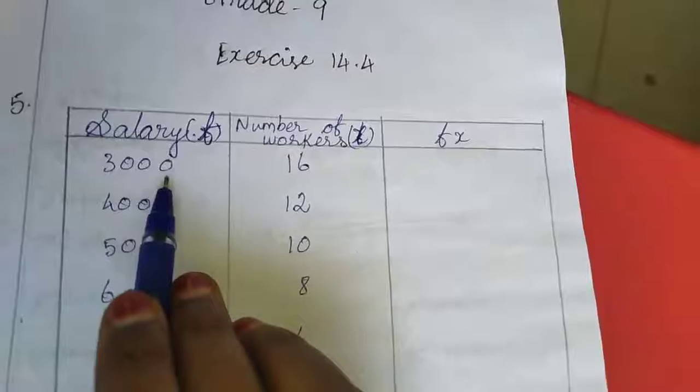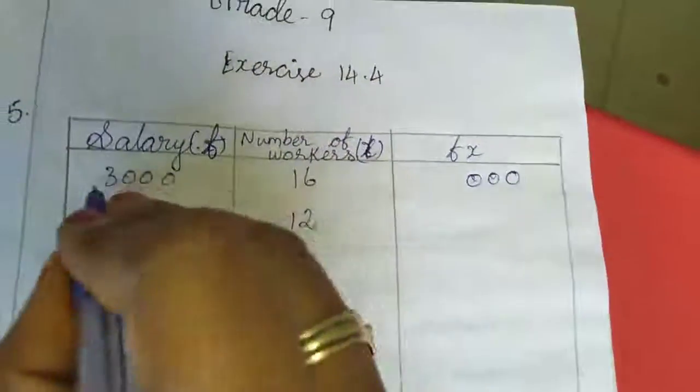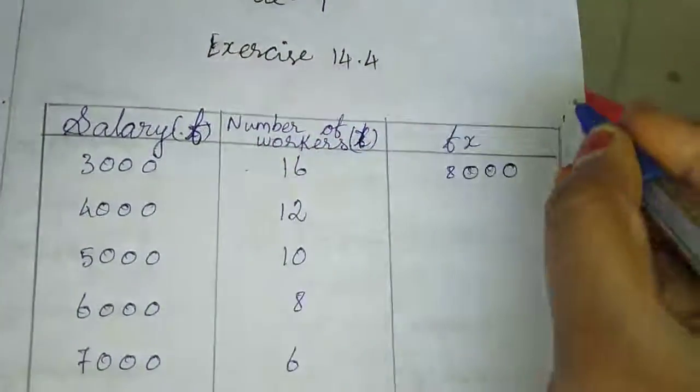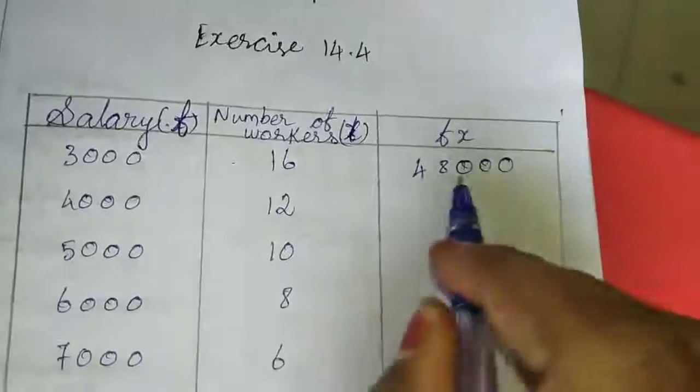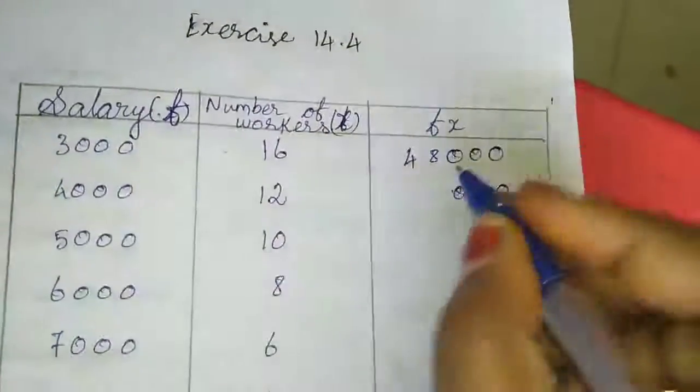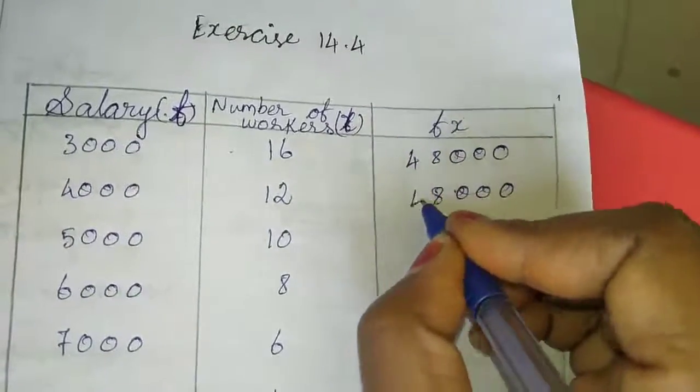First I am multiplying. If we have zero at the last, the zero will be included. Now 3 into 16: 3 sixes are 18, 8, carrying 1. 1, 3 is 3, 3 plus 1, 4. So 48,000. These 3 zeros, here also 3 zeros will come like that. 12 into 4, so 4 twos are 8. 48,000.